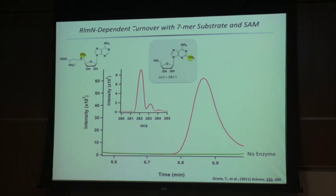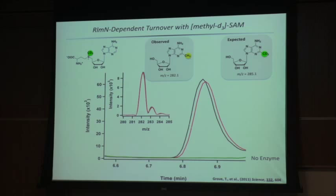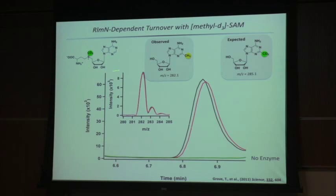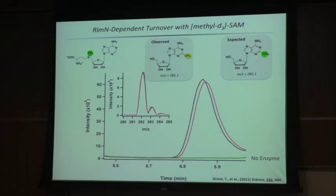When we take RLMN with unlabeled S-adenosylmethionine under turnover conditions, we get a peak in our LC traces at about 6.9 minutes, and mass spec gives an M/Z consistent with the expected product. Leaving out the enzyme gives no peak — that's our control. However, if we use deuterated S-adenosylmethionine (CD3), our expected product would be M/Z 285.1. What we observed was M/Z 282.1 — the product does not reflect the methyl donor. The same result holds for CFR methylating at C8: using deuterated SAM gives an unlabeled methyl group in the product.